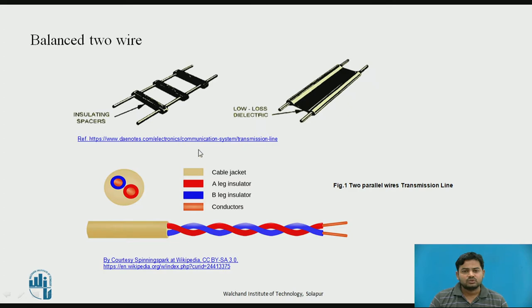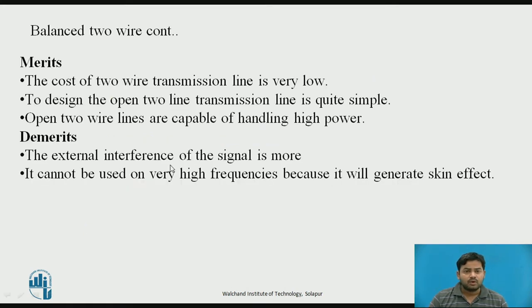In this two-wire transmission line there is also one more variant — the twisted cable transmission line, where the cable is twisted. This covers the balanced two-wire transmission line.